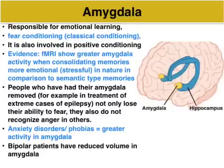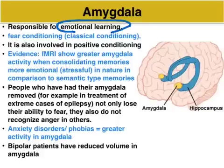Regarding the amygdala's role in learning, there are two key points. First, it mediates the emotional aspects of episodic memory — essentially it's responsible for emotional learning. Second, it is involved in fear conditioning when exposed to a phobic stimulus or anxiety-producing stimulus. We'll cover more about that when we get to classical conditioning later in the course.